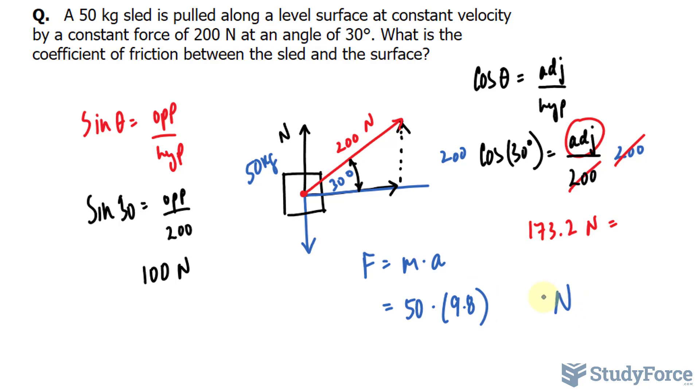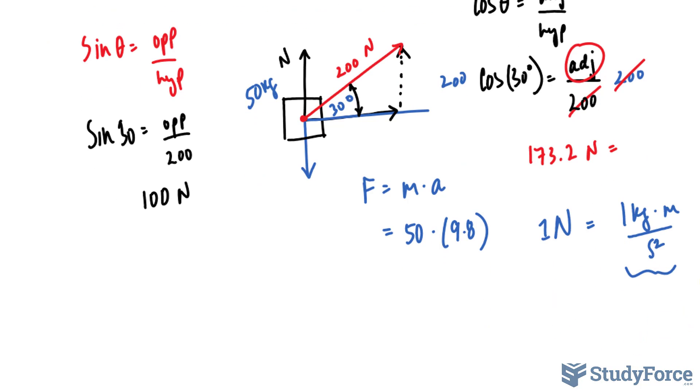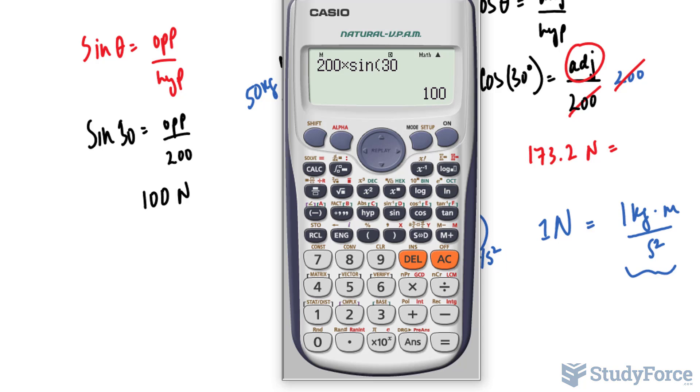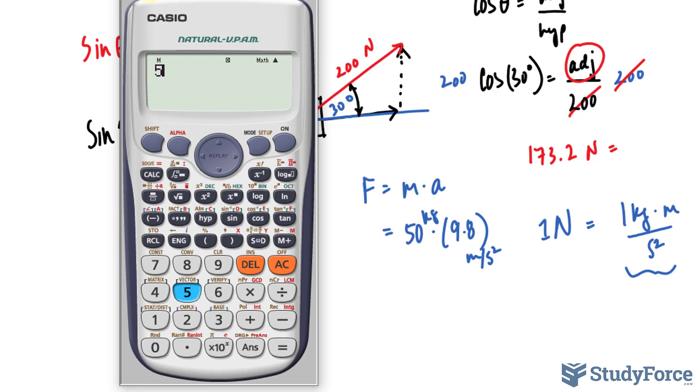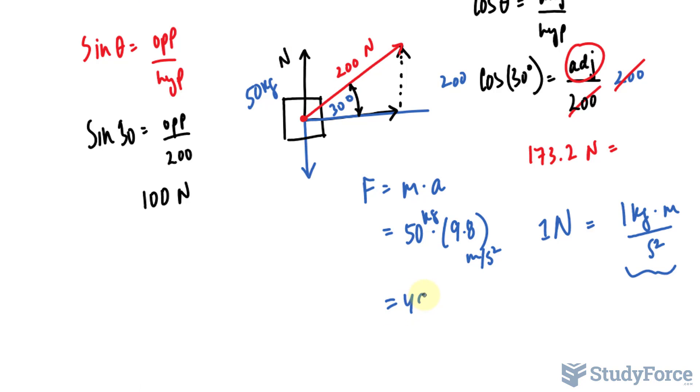Now, it's important to note that 1 newton equals 1 kilogram times meters per second squared. So this is an SI unit that breaks down into that. And this is why when we multiply 50 kilograms with 9.8 meters per second squared, we get a unit of force. Anyway, let's continue. 50 times 9.8 makes 490 newtons.